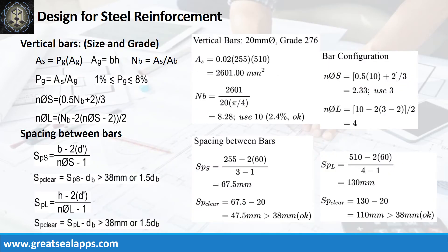Given steel ratio equals 2%, assume column width equals 255 mm and assume column length equals 510 mm. The area of steel is 2601 square millimeters, and the number of vertical bars for a 20 mm bar is 10, with 3 bars along the short side and spacing between bars at 67.5 mm for 47.5 mm clear spacing, and 4 bars along the long side with spacing between bars at 130 mm for 110 mm clear spacing.